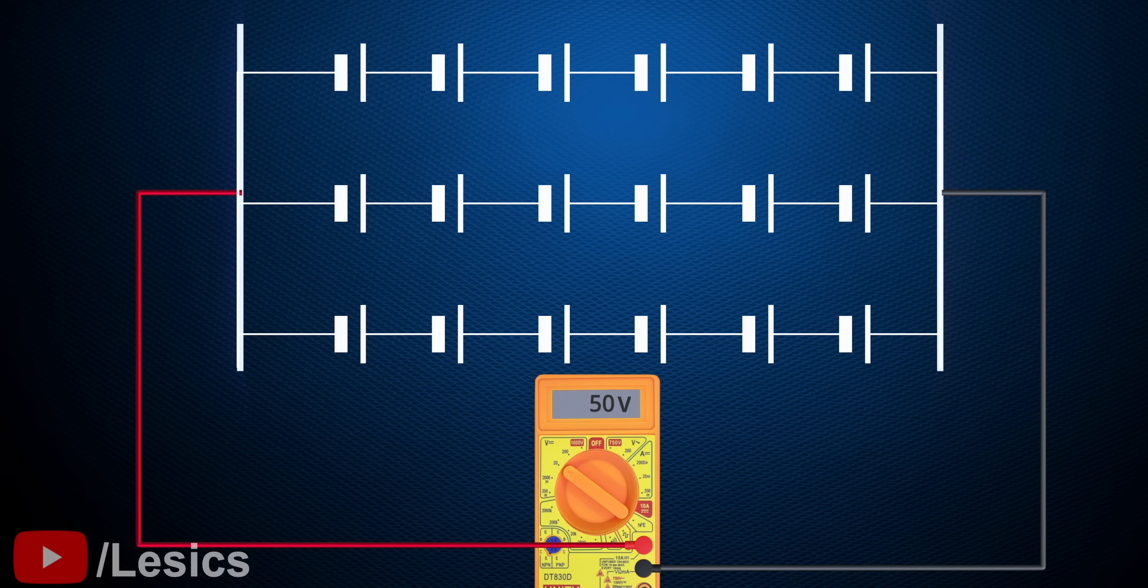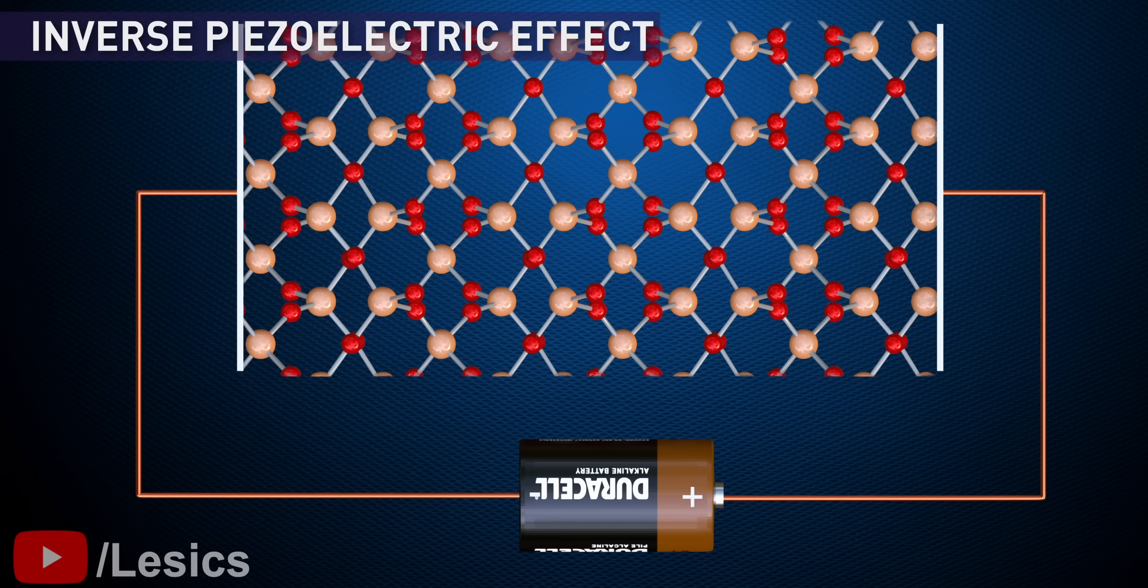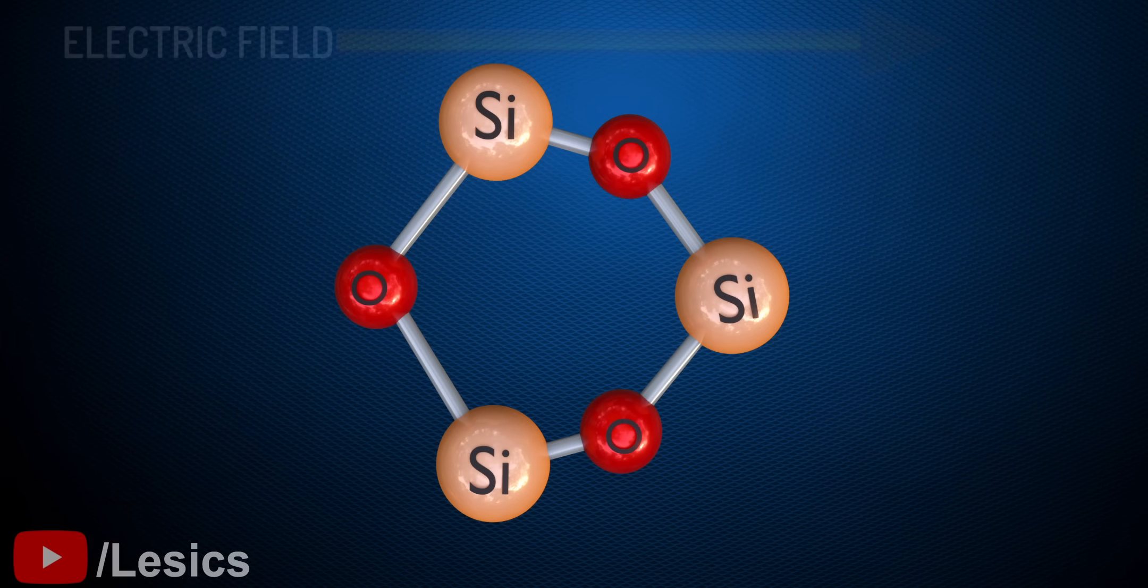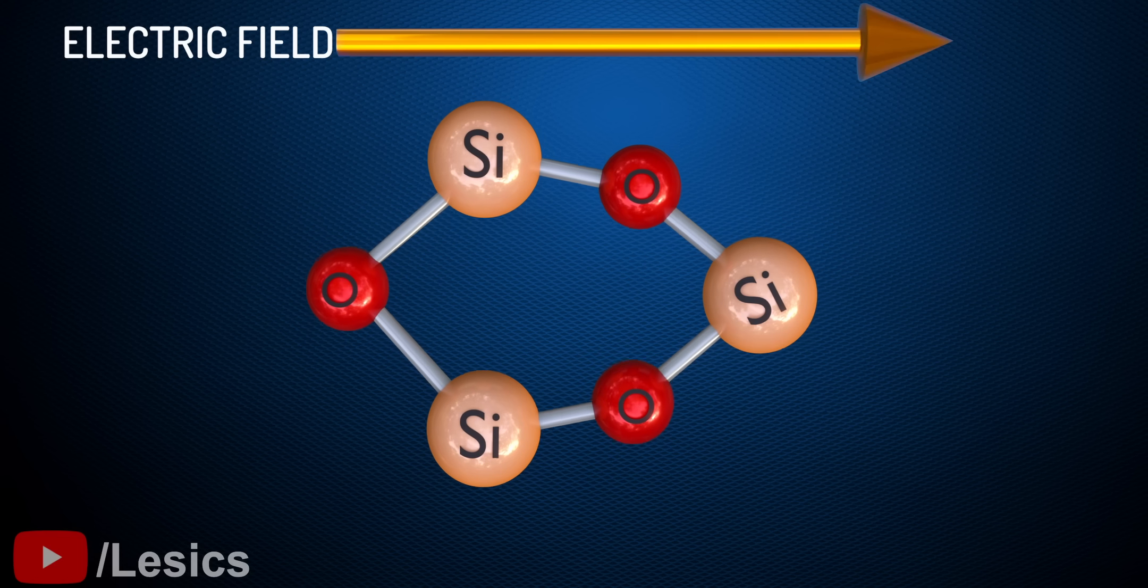Now what do you think will happen if a voltage is applied across the material? The special characteristics of piezoelectricity is that it is reversible. If a voltage is applied across the material, the positive and negative charges of the material will experience forces in the opposite directions and the hexagon will get stretched.